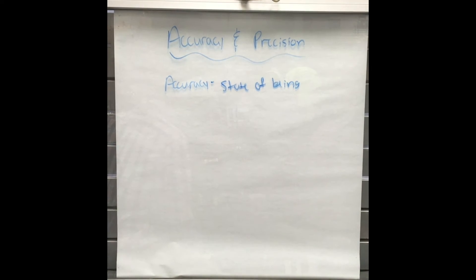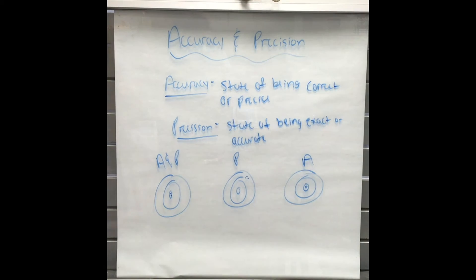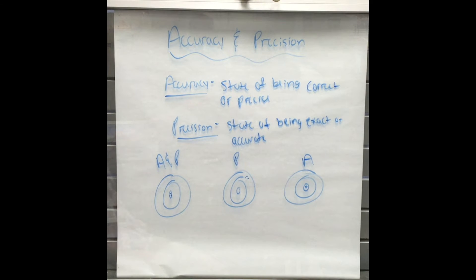Next we must define accuracy and precision. Accuracy is how close the experimental value comes to the theoretical value, while precision is how close each experimental value is to each other.